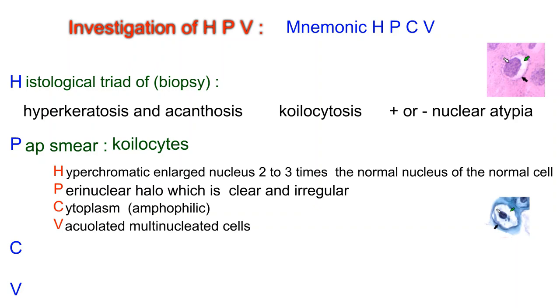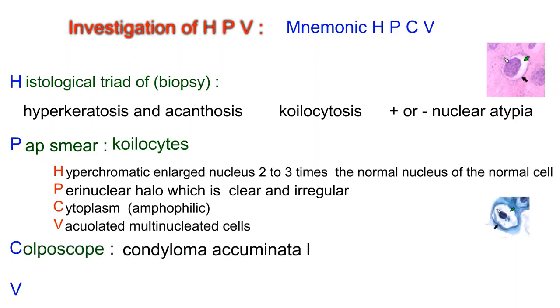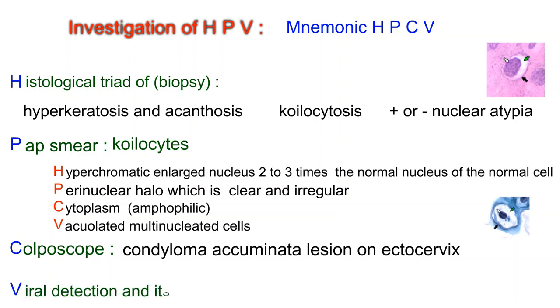C: Colposcopy shows condyloma acuminata lesion on the ectocervix. V: Viral detection and its subtypes by DNA hybridization using PCR.